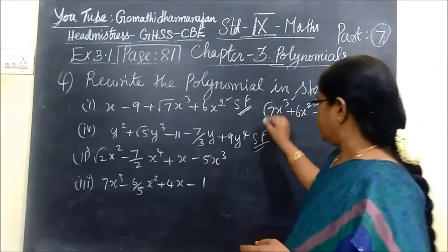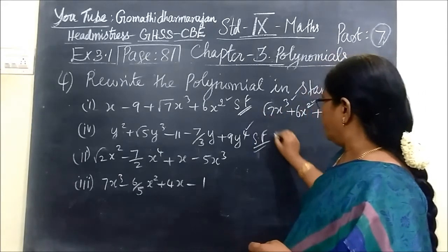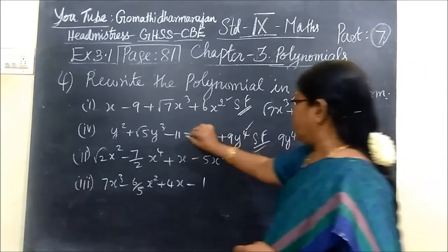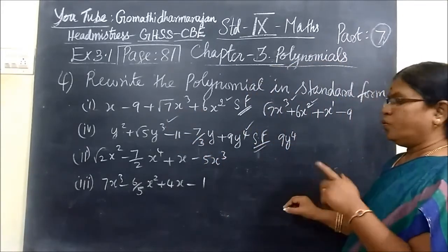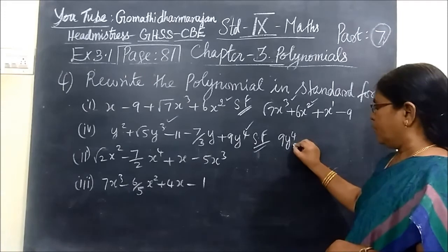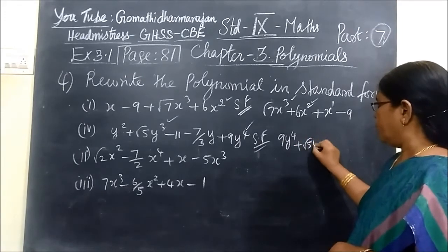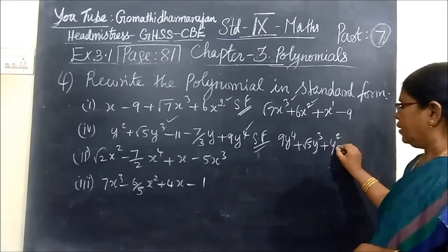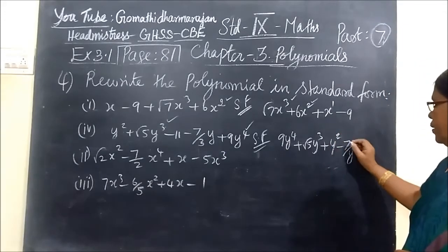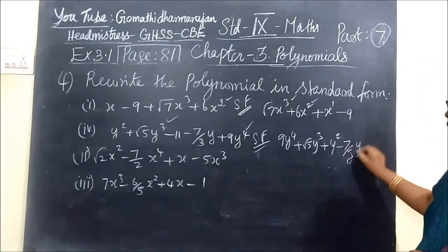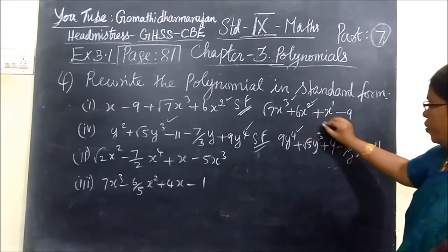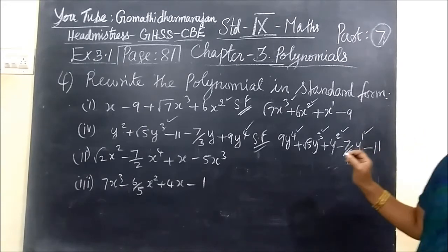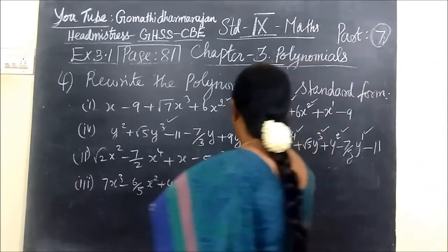Here the highest power is 4, so write 9y power 4. Then next we write: 4, 3, 2, 1, 0. Then next, root 5 y cubed, then y squared, then y, then minus 11. So power 4, power 3, power 2, power 1, no power at all. Now here is the standard form.